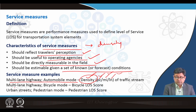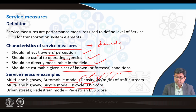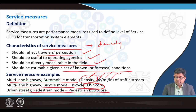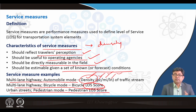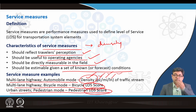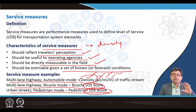Similarly, for the multi-lane mode, bicycle level of service can be calculated using a bicycle level of service score. For urban streets, the pedestrian level of service can be estimated using a service measure called a pedestrian level of service score. This is how you make the connection between service measures, quality of service, and level of service.